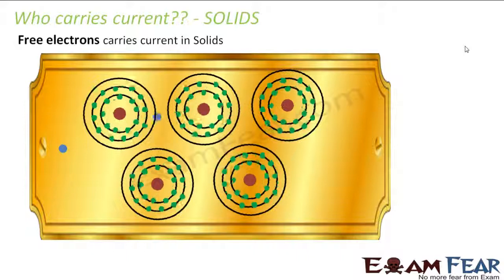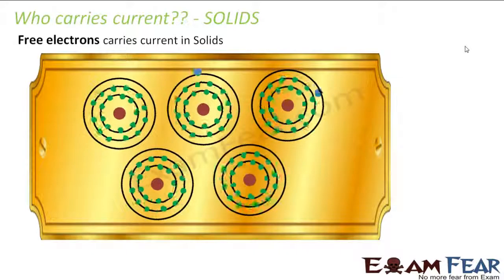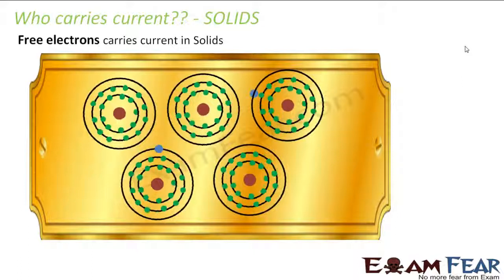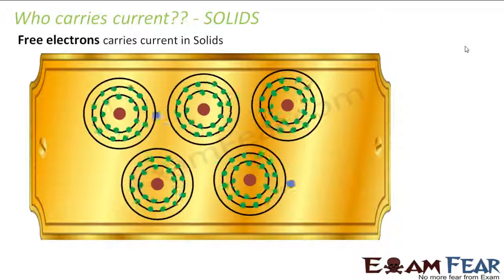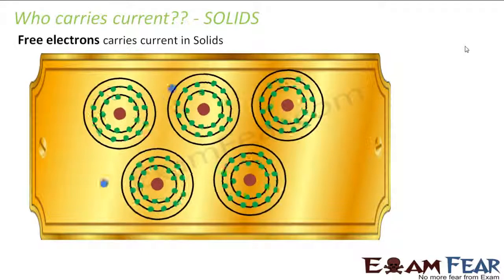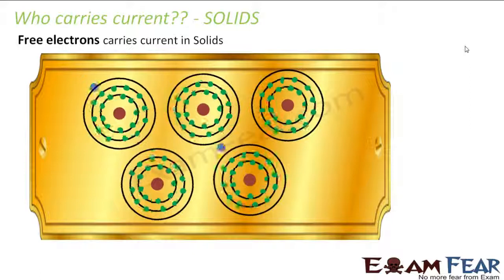So now we will look at who carries current. Till now we understood that current is nothing but flow of charges. What causes the flow of charges? The difference in potential between the two ends of a conductor causes the charges to flow. So now the question is: who will carry this current?